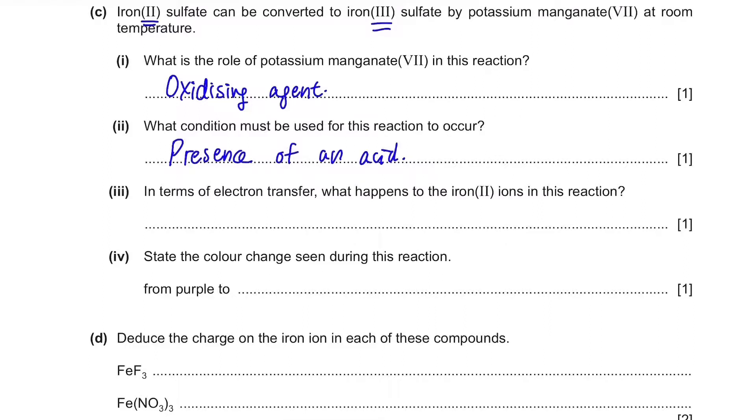In terms of electron transfer, what happens to the iron 2 ions in this reaction? So you can see that ion 2 Fe2+ became Fe3+. Well, the number of protons do not change, but just the number of electrons that are changing. So it has actually lost an electron to become 3-plus from 2-plus.